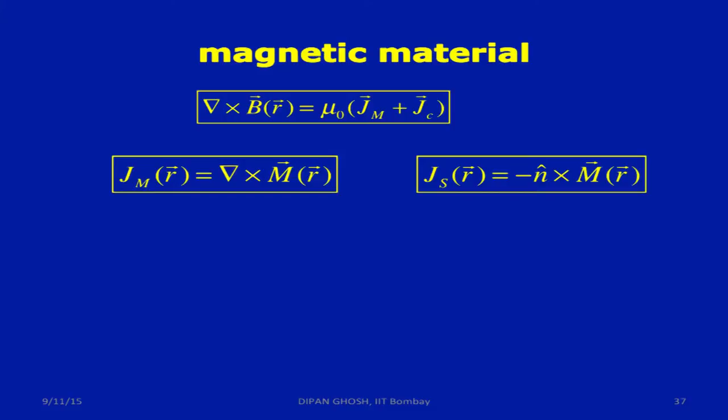Del cross B was equal to mu_0 J. We have said J now has two parts: a conducting part J_C and atomic current density part which is J_M. This J_M then is given by del cross M of R, and the surface one is given by N cross M of R. Remember again, parallel thing. We had minus del dot of P and P dot N. Here there is a reason why the signs are different, because of the convention that the direction of the dipole moment is from the negative charge to the positive charge. But other than that, the derivations are identical and the conclusions are similar.